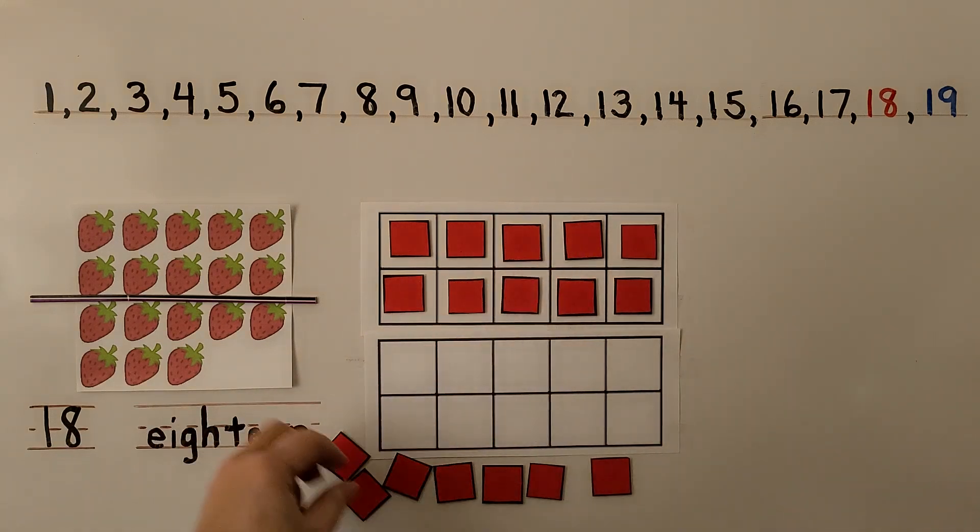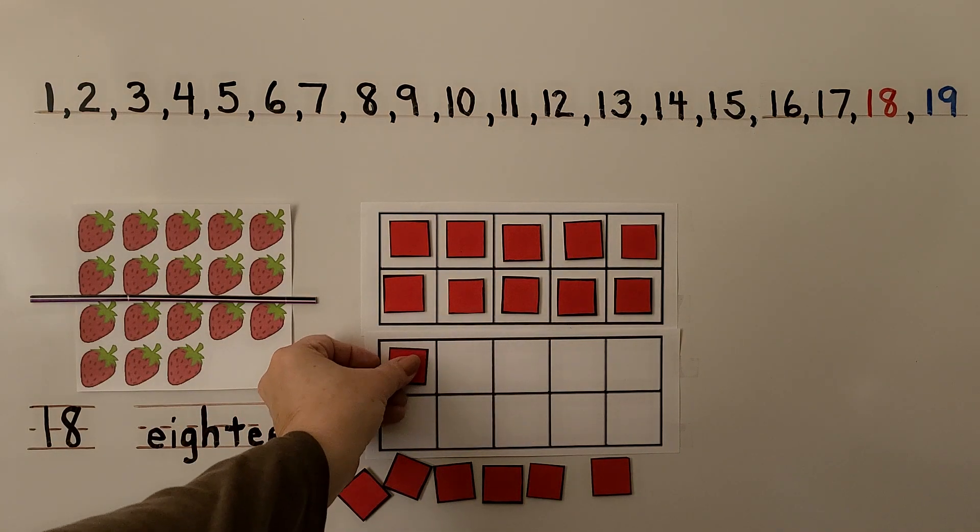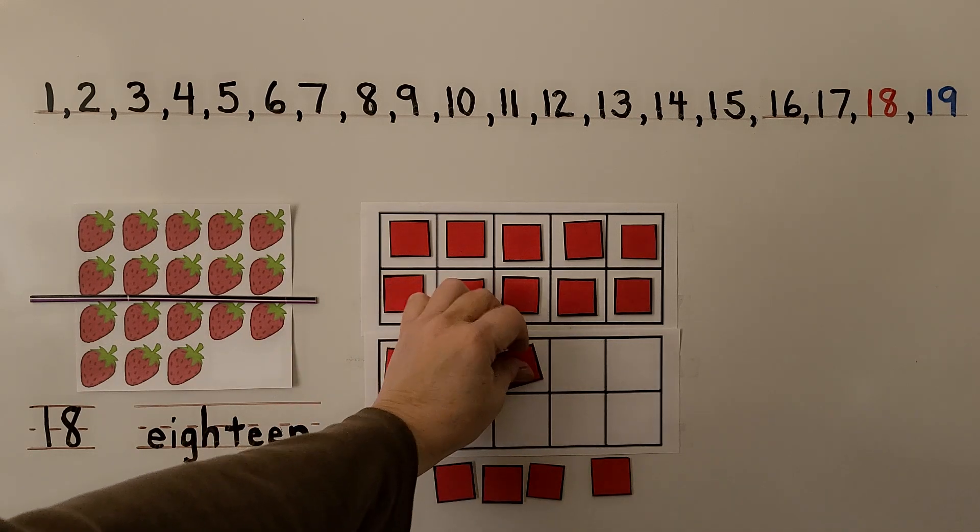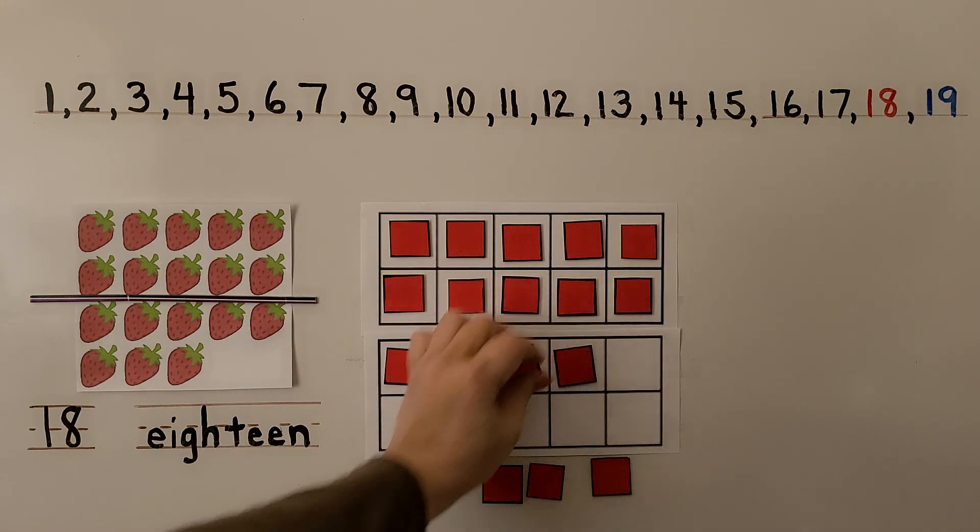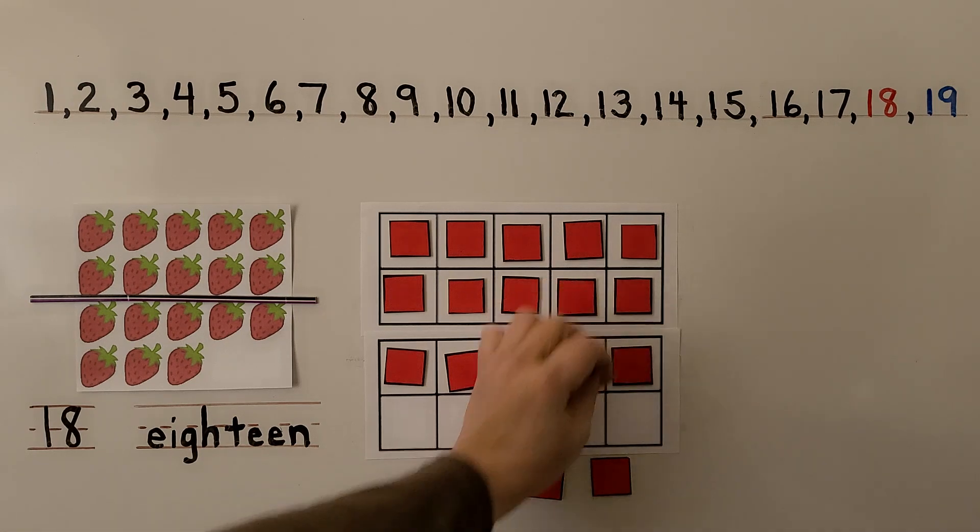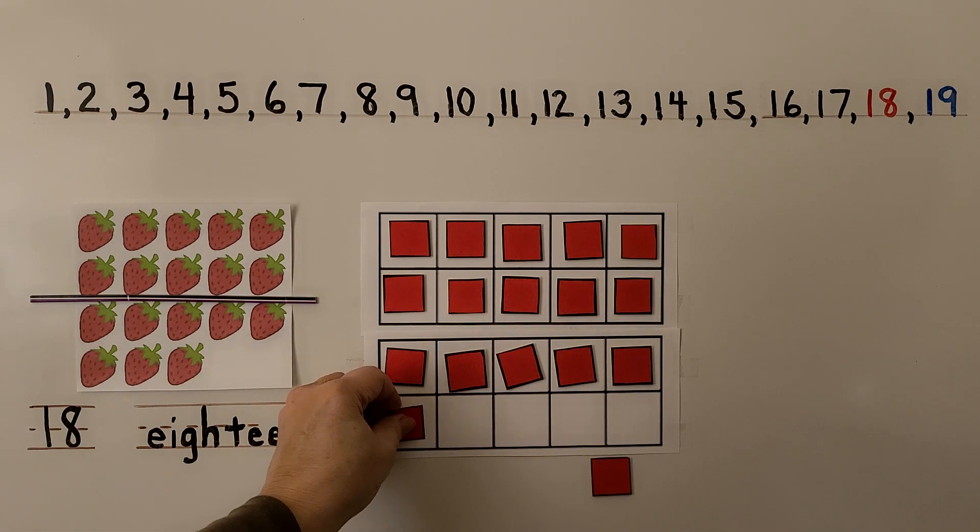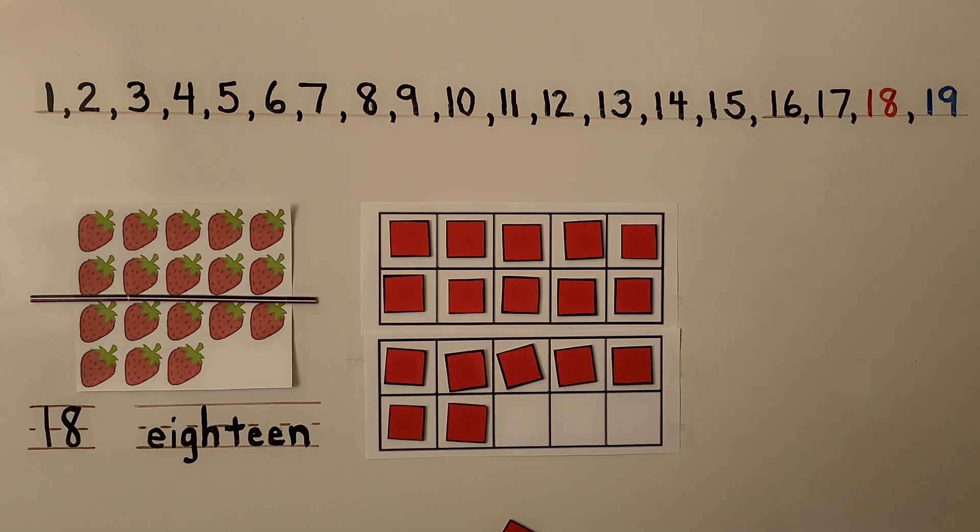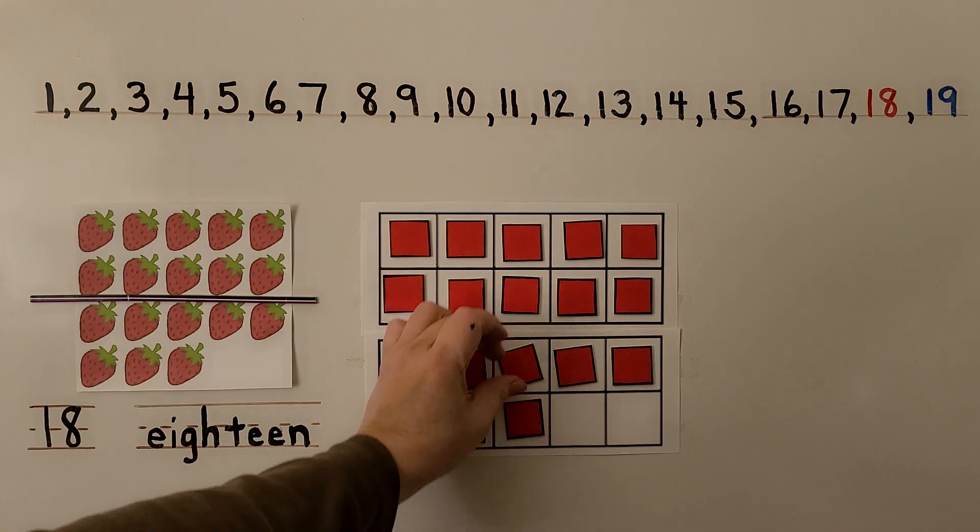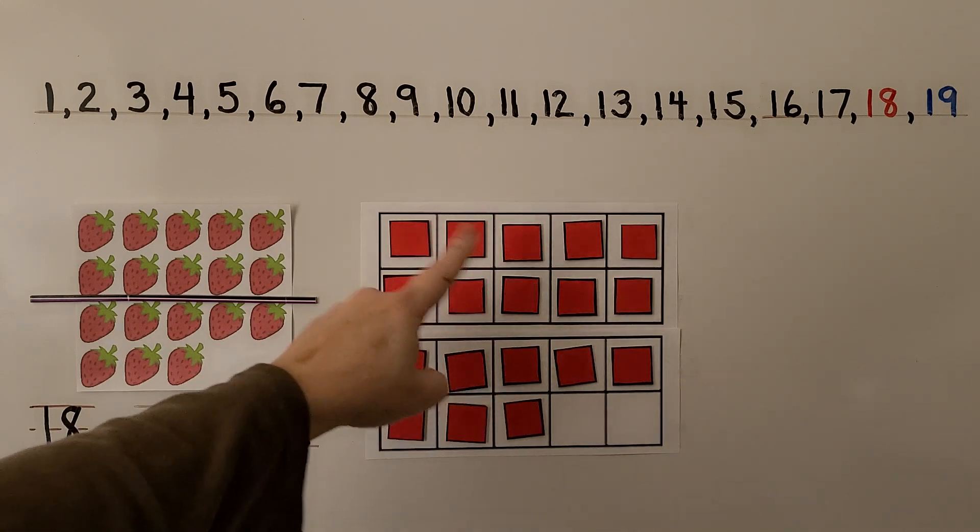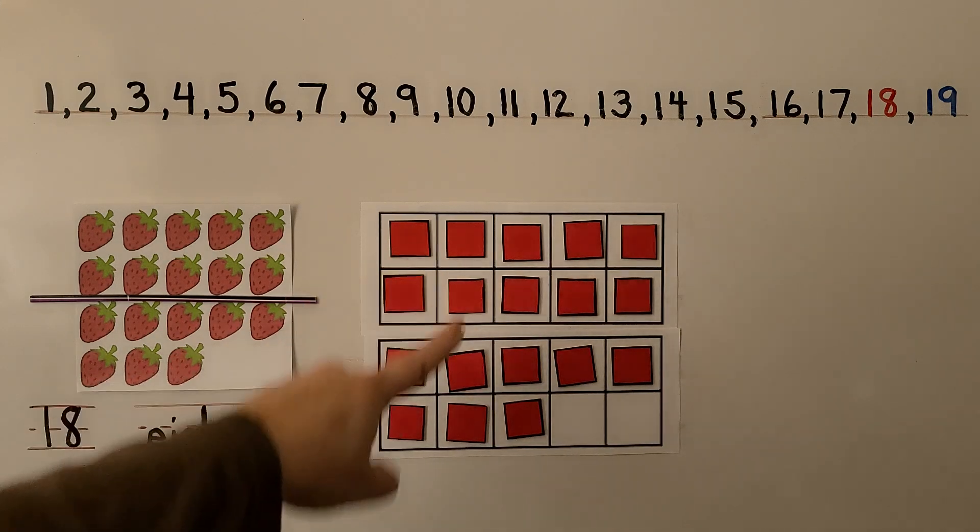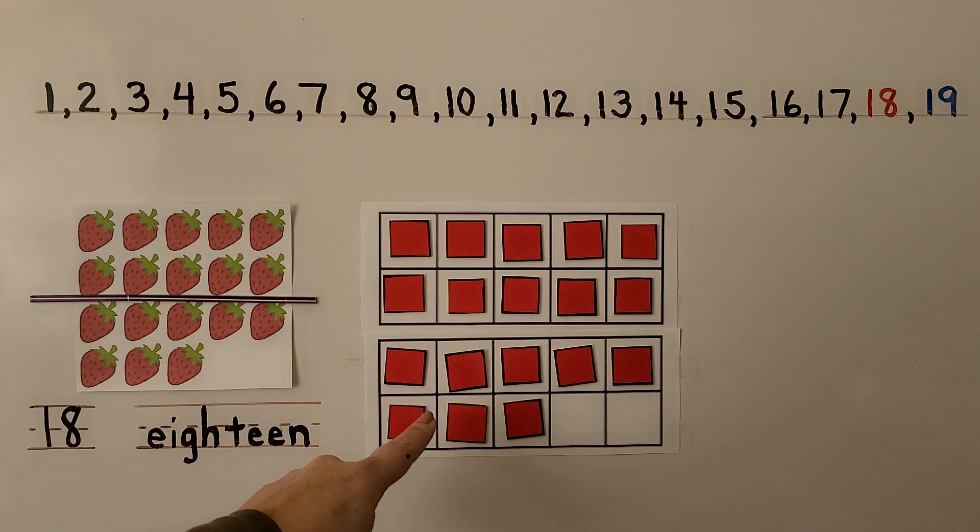We have one set of 10 and we can put 1, 2, 3, 4, 5, 6, 7, and one more would be 8. We have a set of 10 and 8 more. We have 18. We fill the top frame and put 8 in the bottom frame.